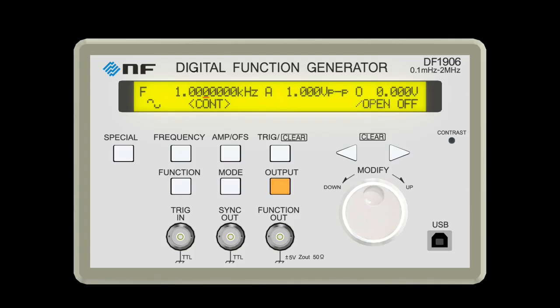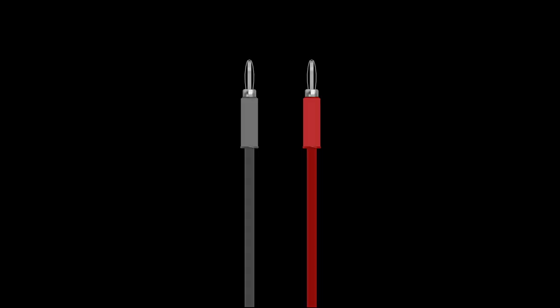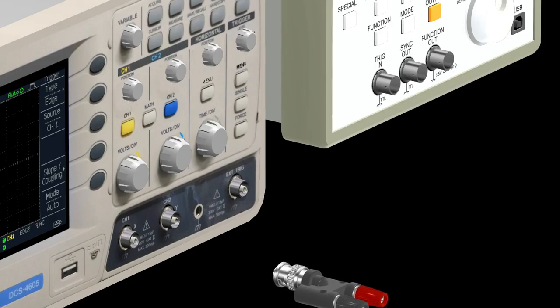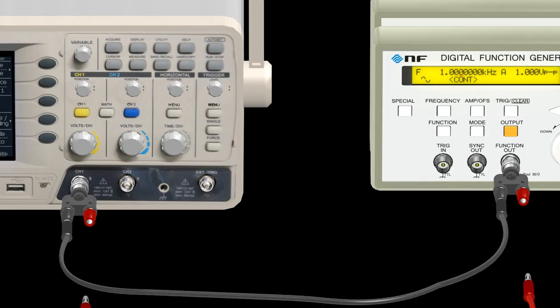The AC signal generated by the oscillator is output from the connector labeled function OUT. This signal is fed to the oscilloscope's input connector. For connection, use a cable with banana plugs. You will need a conversion connector. Connect the same color to each other.